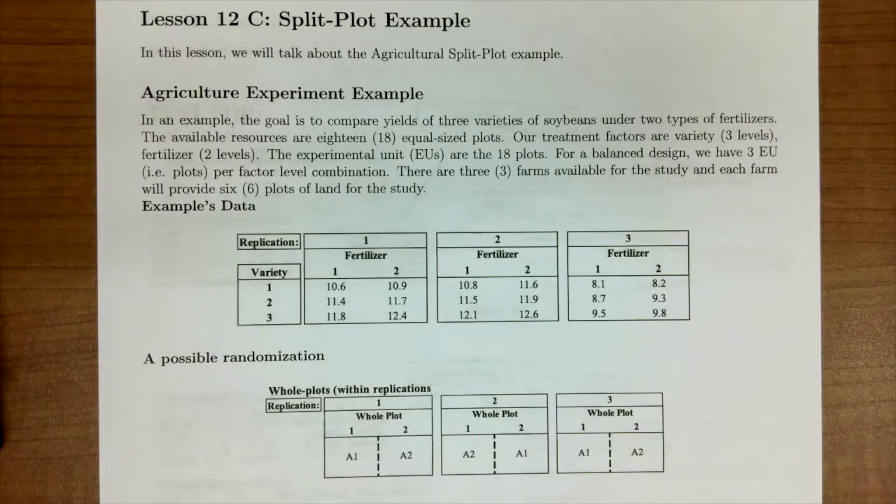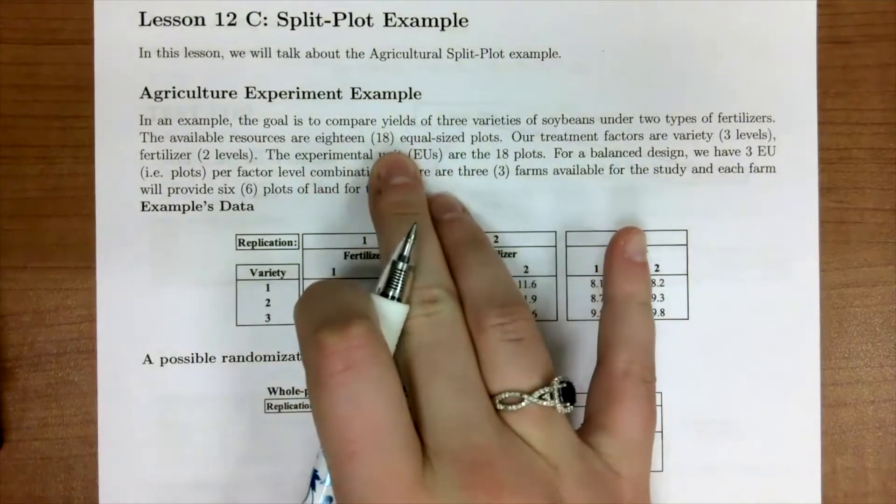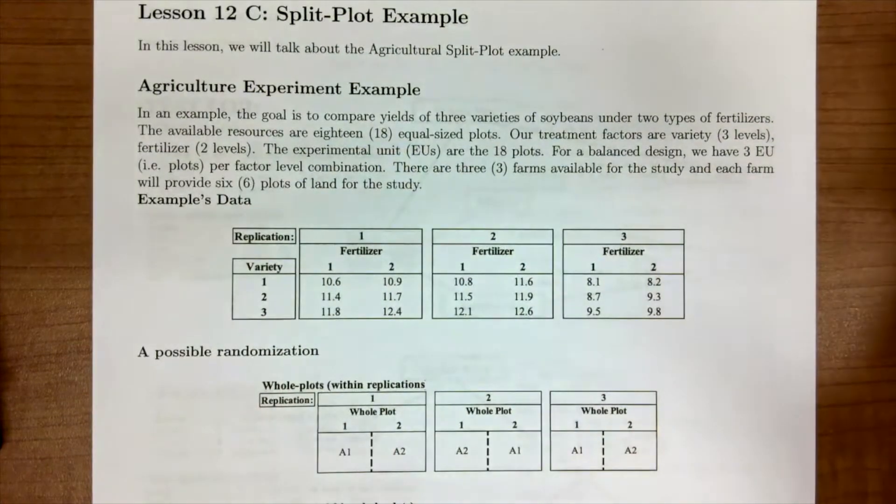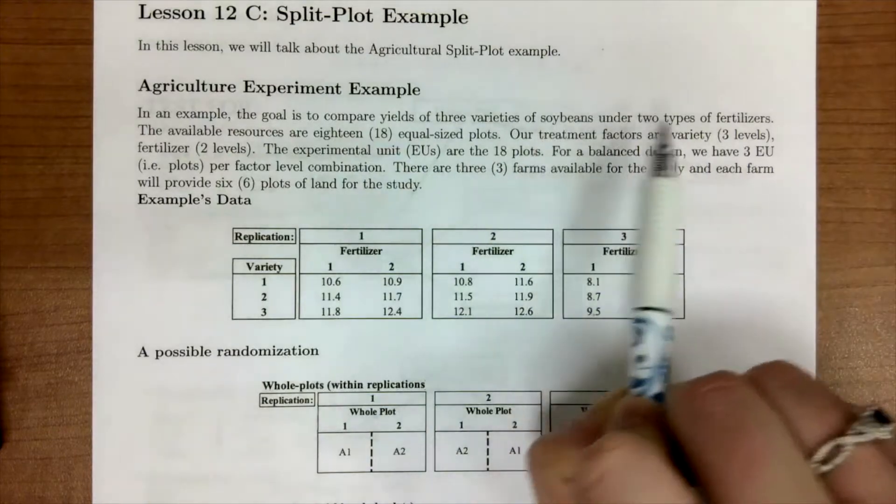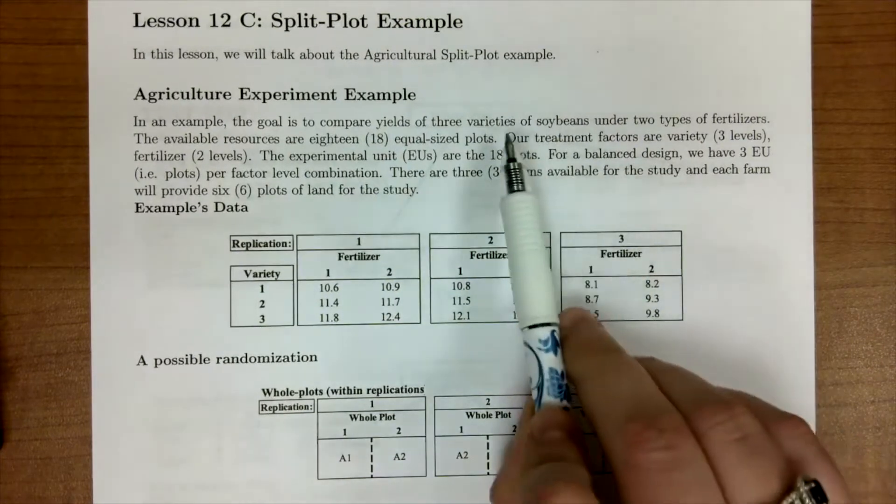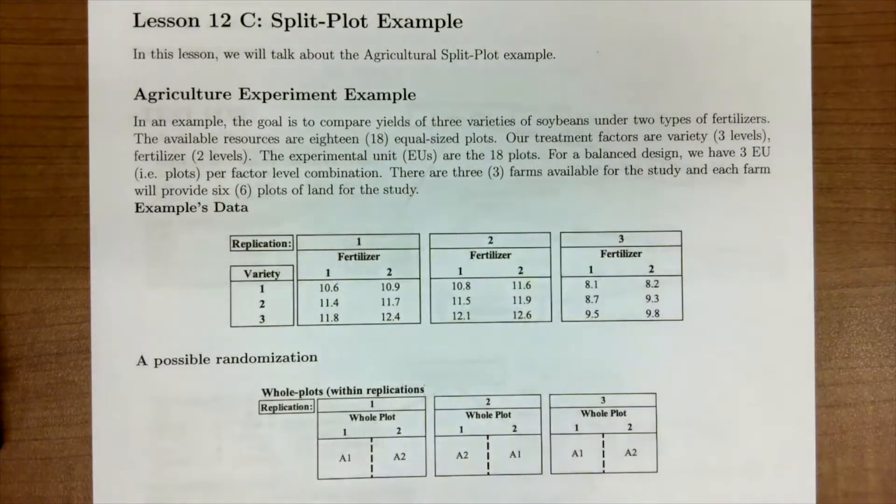In our last lesson about split plot designs, we're going to look at this agricultural experiment example. Here's the data where we are in a split plot design with two factors: fertilizer, which was the hard-to-change factor that made us want to do a split plot design, and variety of soybeans, which was the easy-to-change subplot factor.